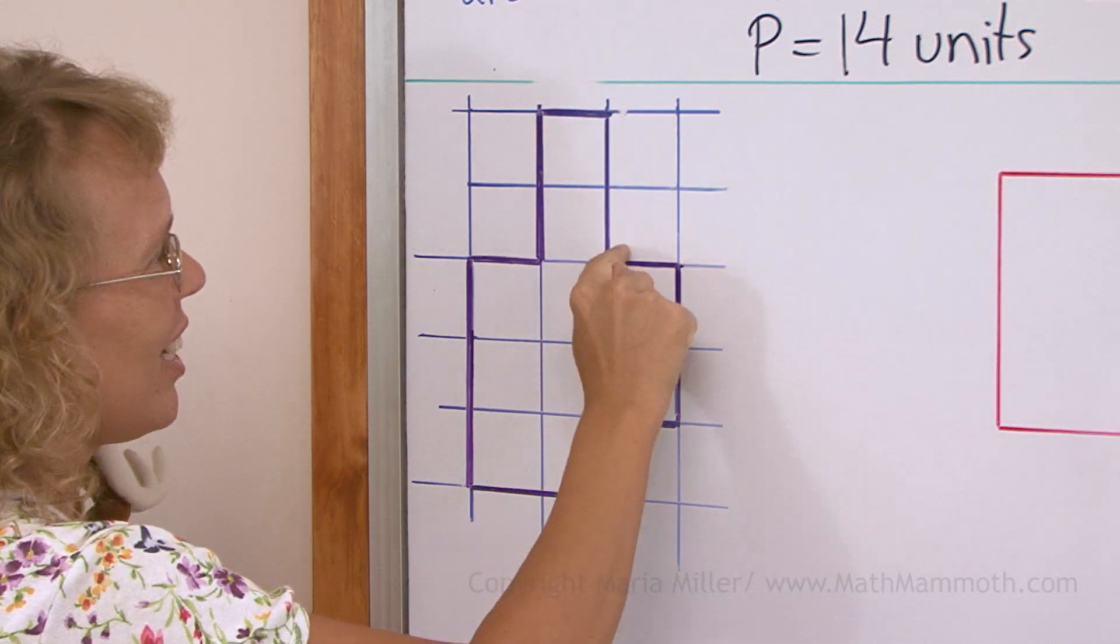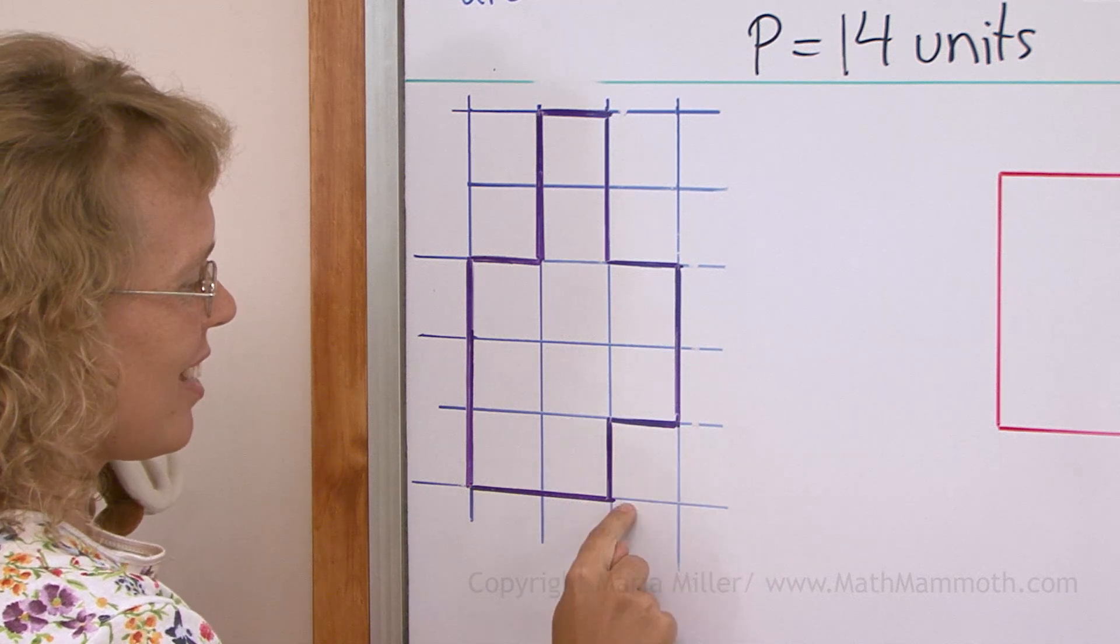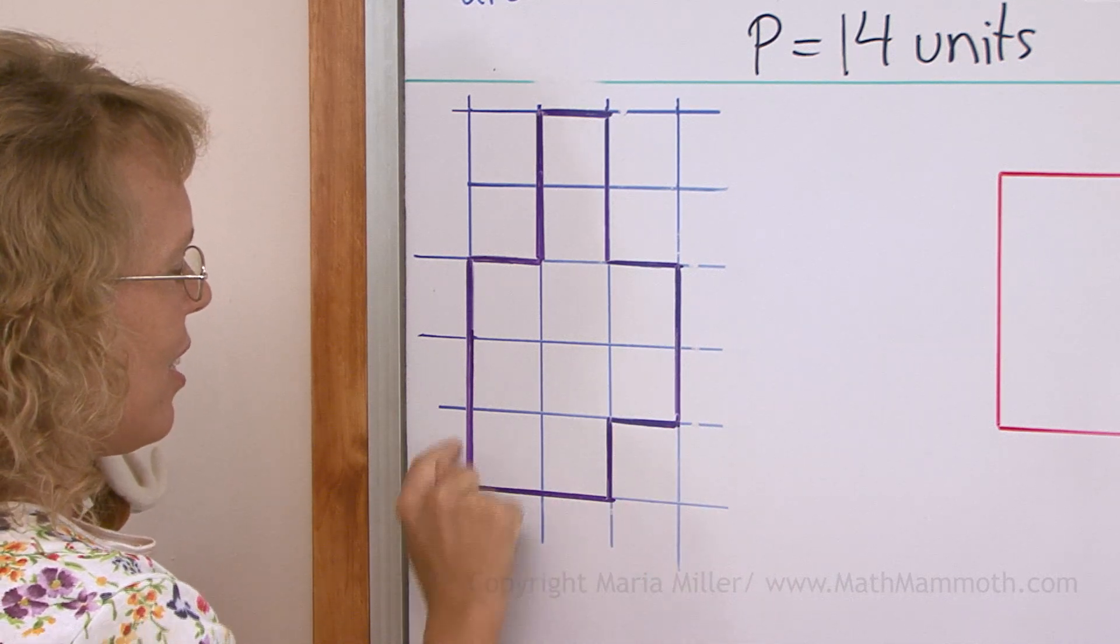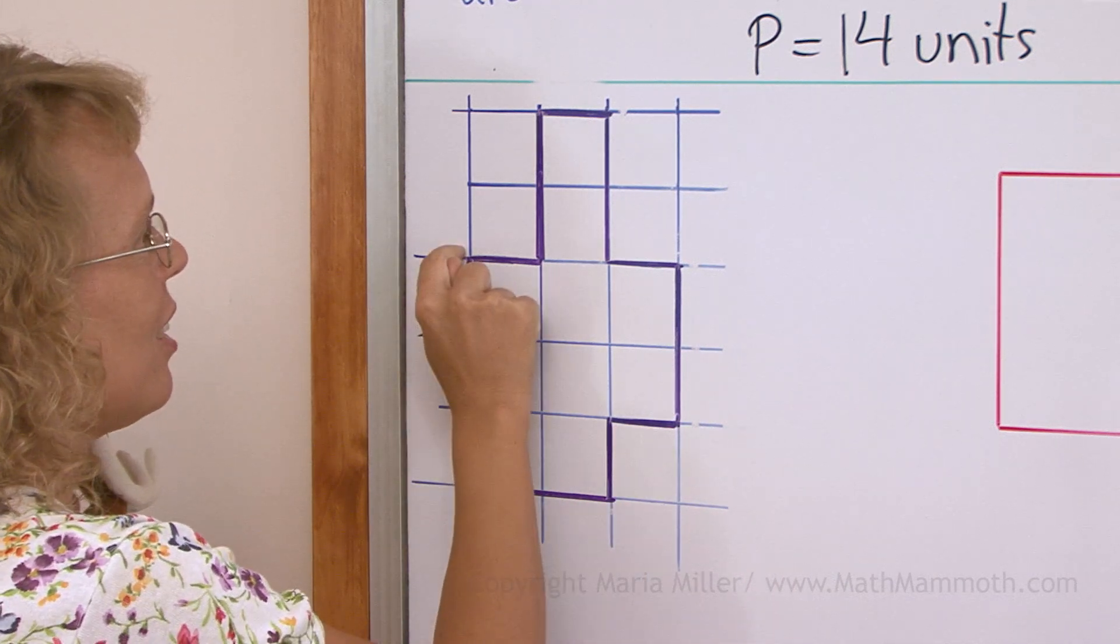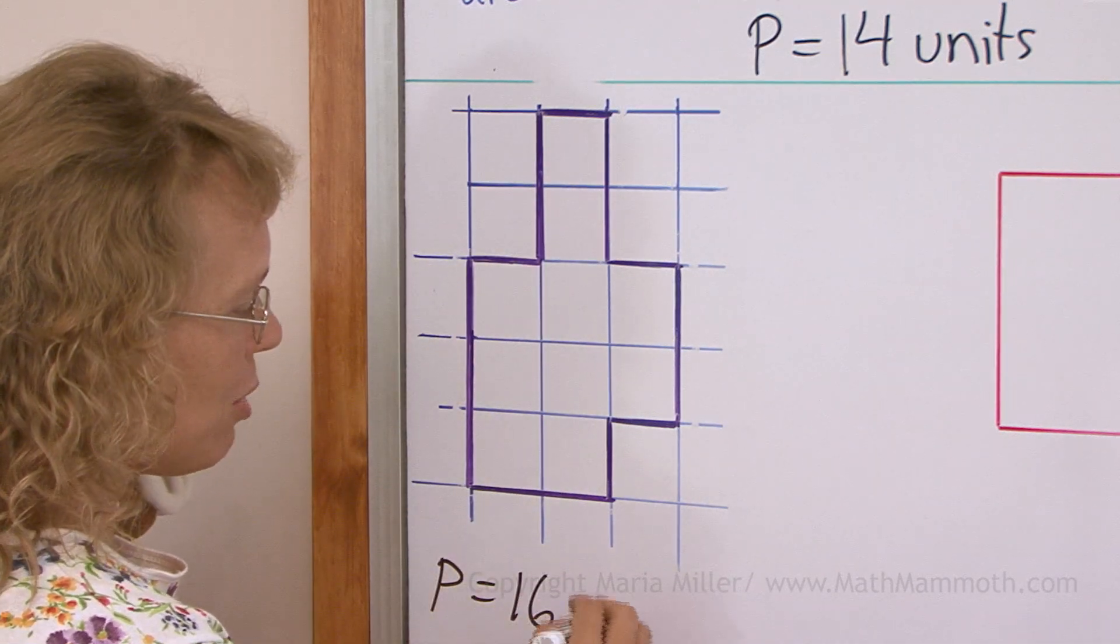One, two, three, four, five, six, seven, eight, nine, ten, eleven, twelve, thirteen, fourteen, fifteen, sixteen. Okay, so the perimeter equals sixteen units.